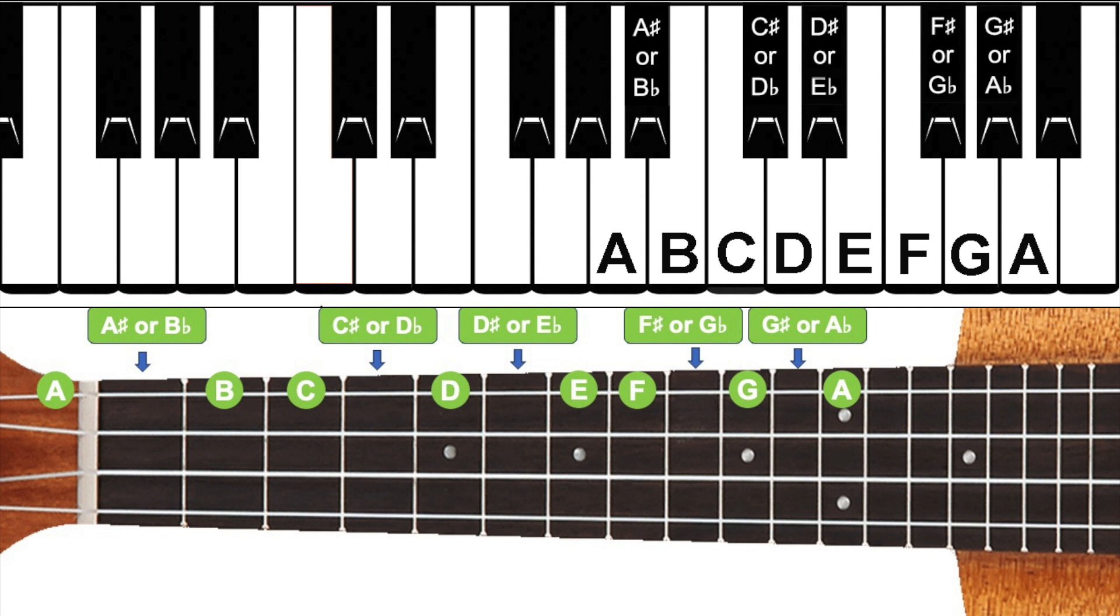This format of the natural notes, A, B, C, D, E, F, G, and then A again, with the sharps or flats in between certain notes, as just discussed, is always the same in western music, no matter what instrument we're playing.